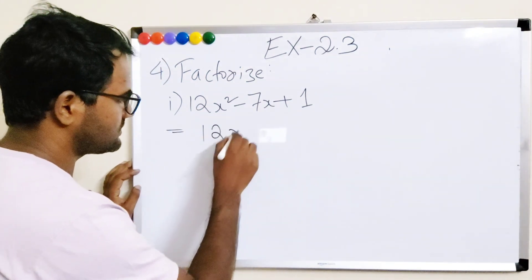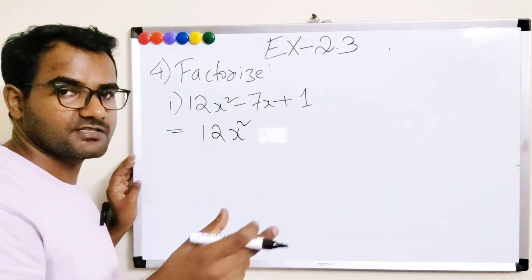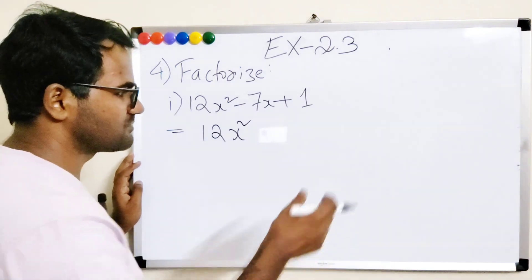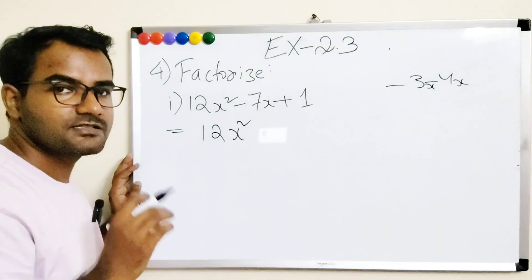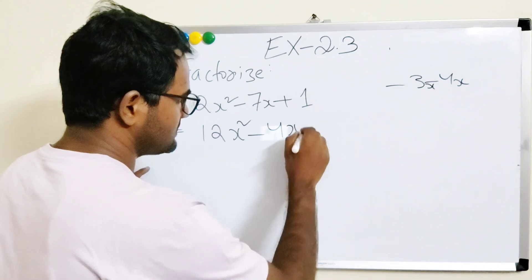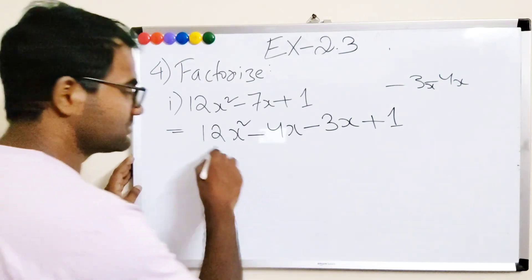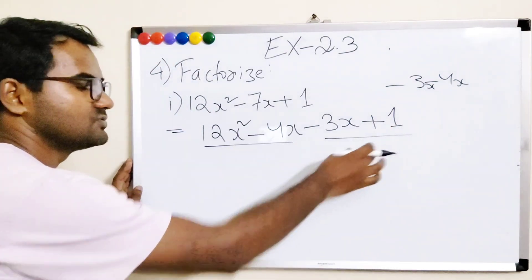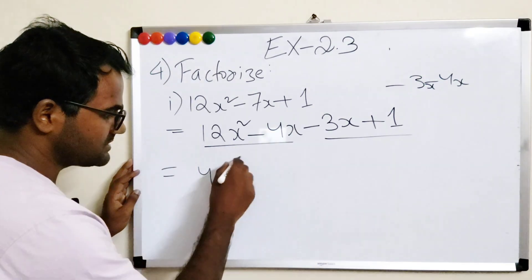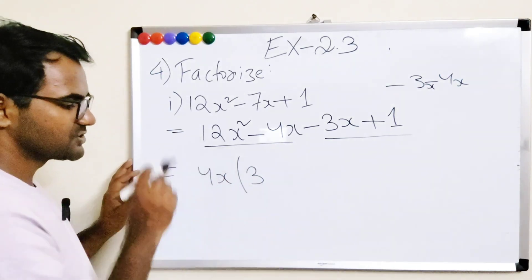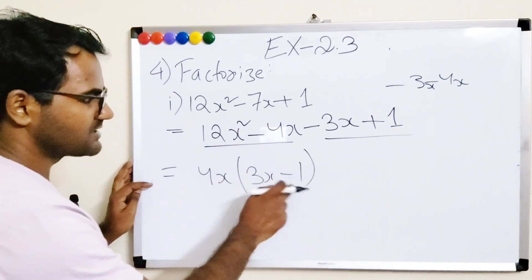So we split the middle term and write: 12x² minus 4x minus 3x plus 1. Now we take common factors from the first two terms. Taking 4x as common: 4x(3x minus 1). Here 3 × 4 = 12 and x × x = x².